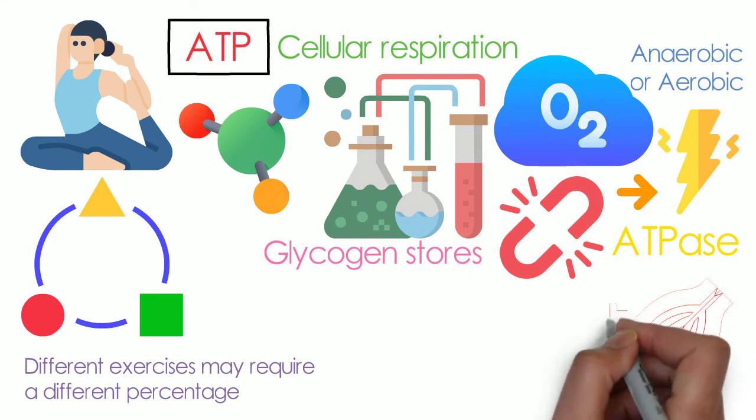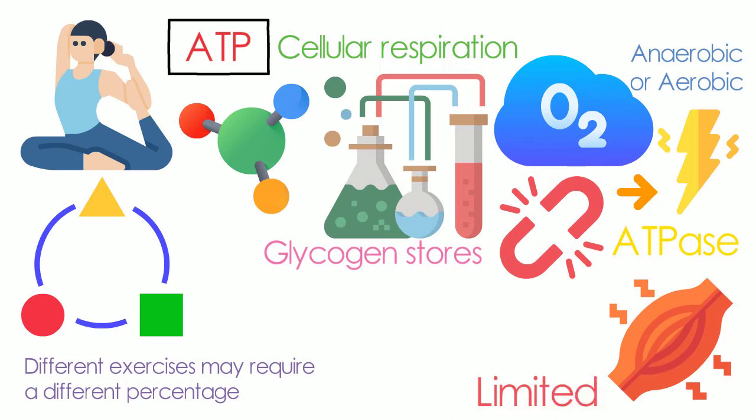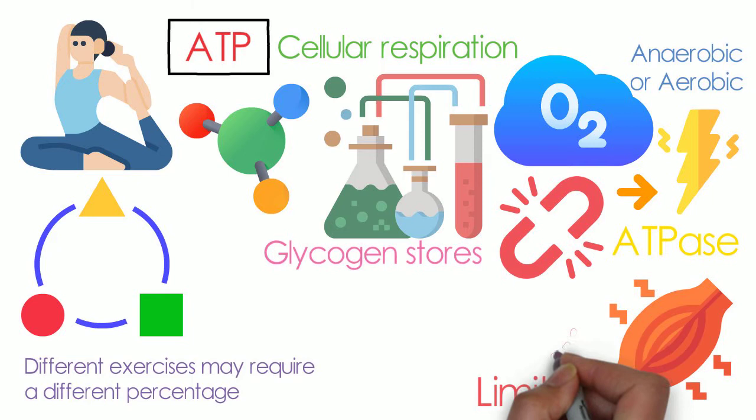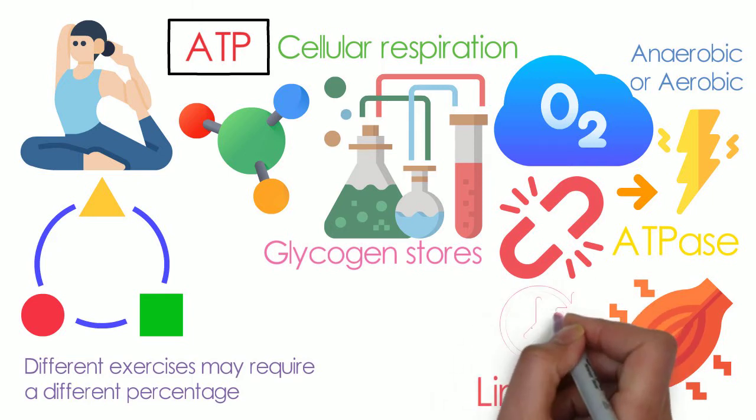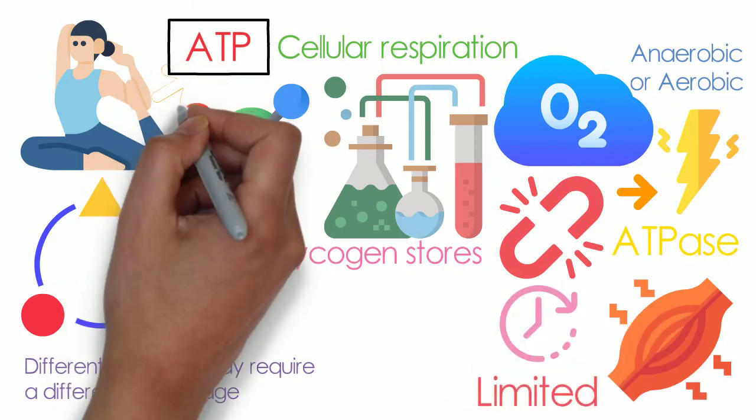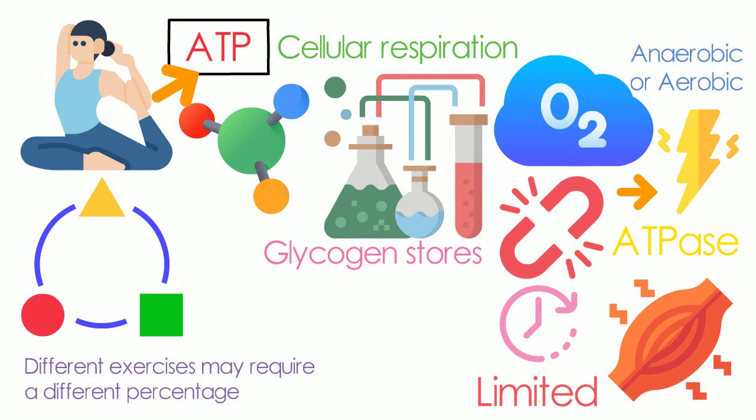ATP is the only energy source that the body's muscles can use for energy. However, ATP stores are limited in the muscle cells, and their energy can be used up during muscle activities for about three to four seconds. Thus, the body has to ensure a constant supply of ATP for there to be sustained activity.